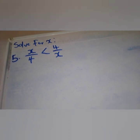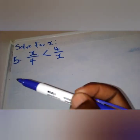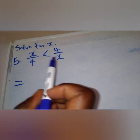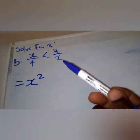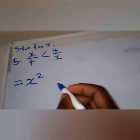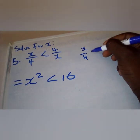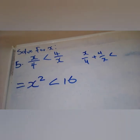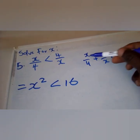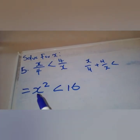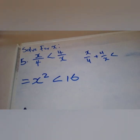We have x over 4 less than 4 over x — these involve fractions. What we need to do is cross multiplication. We multiply x by x to get x squared, and 4 multiplied by 4 gives 16. We do not multiply the denominators together because a sign — the inequality — separates the two fractions.